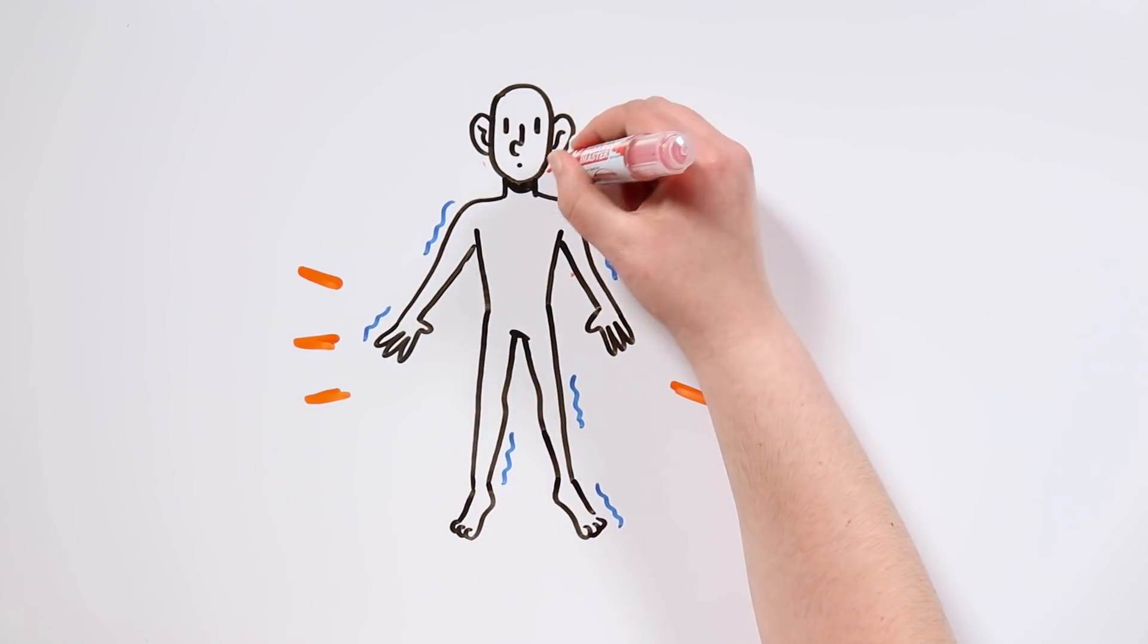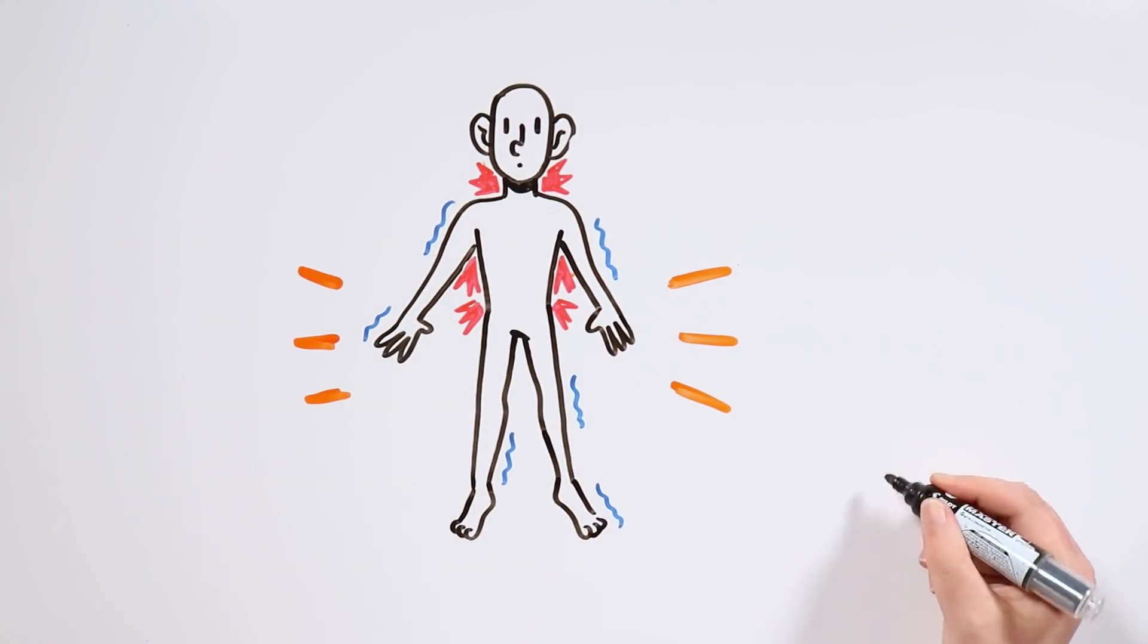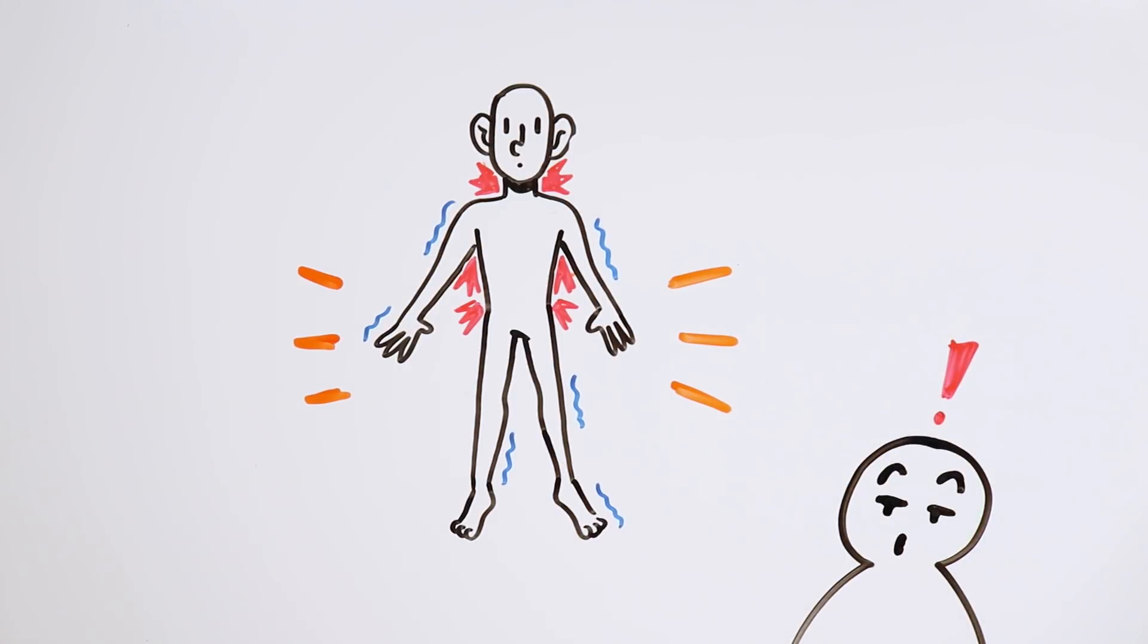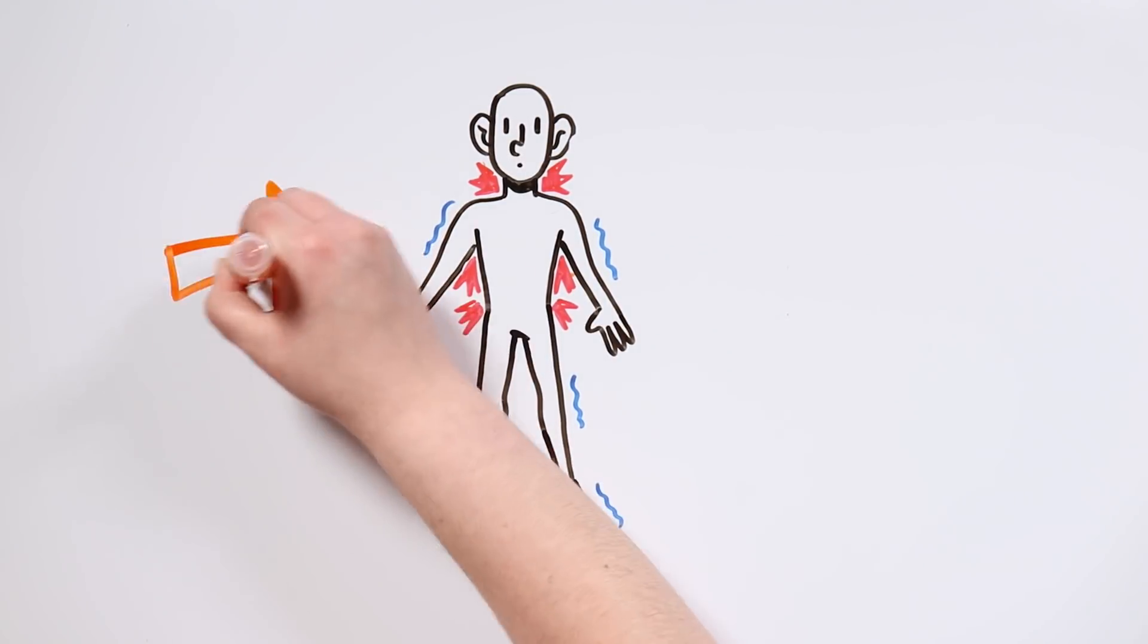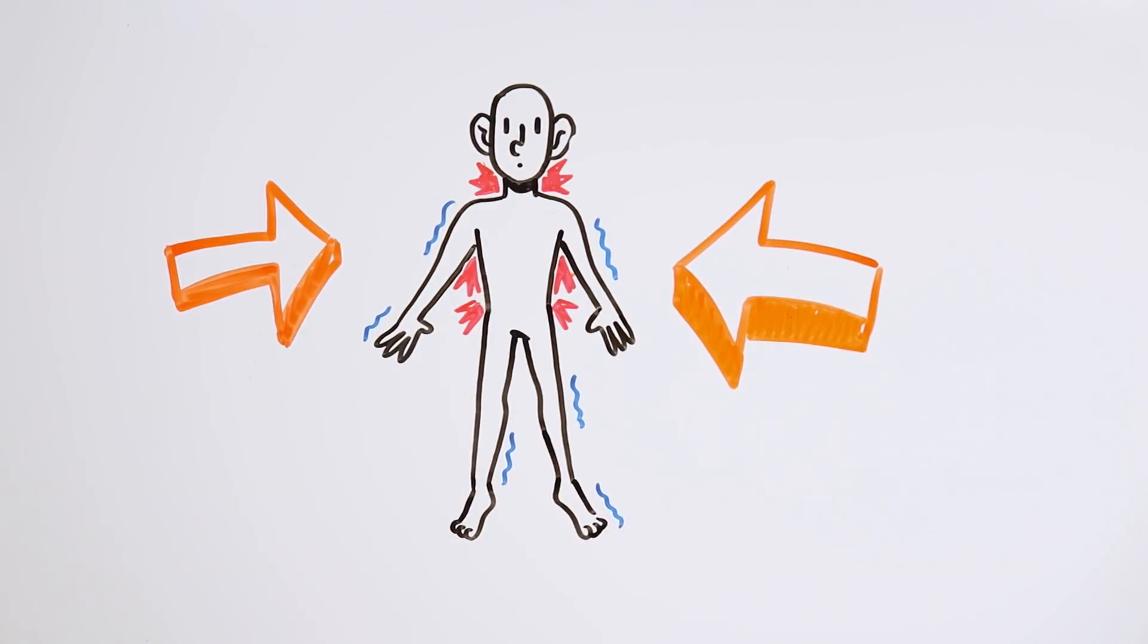Our body responds automatically, and trembles trying to avoid that contact. It's simple self-preservation. And right there is the key of why we could not tickle ourselves.